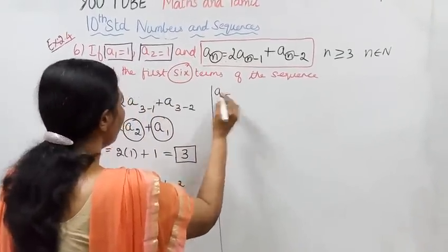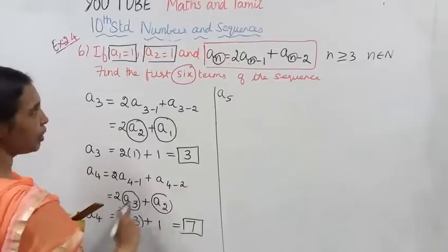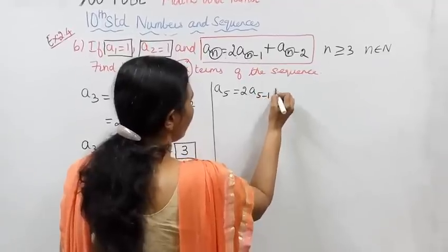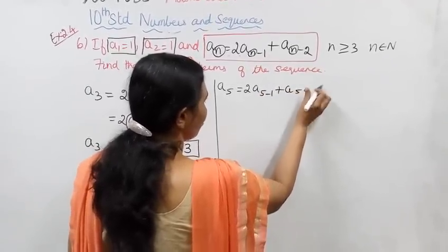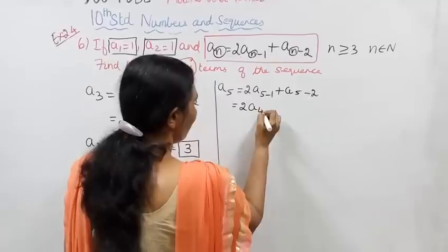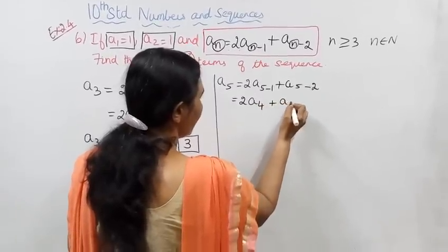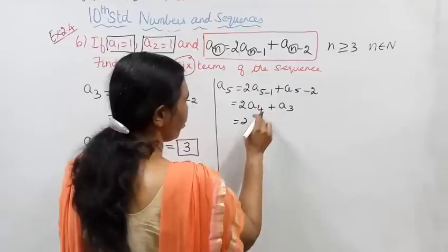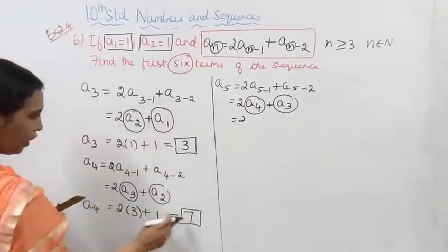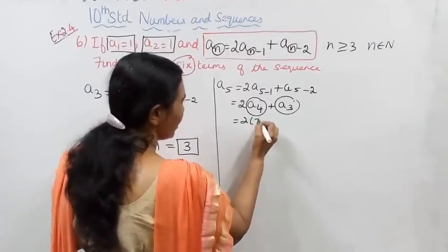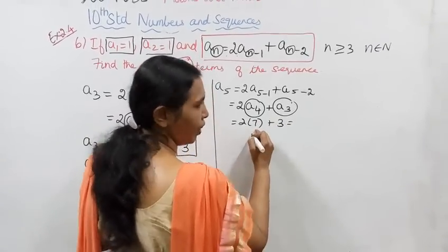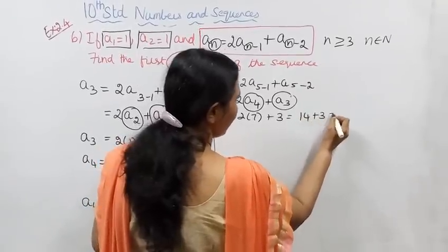A5 equals 2·A4 plus A3. Substituting: A4 value is 7, 2 into 7 is 14, plus A3 value which is 3. That is equal to 14 plus 3, so A5 value is 17.